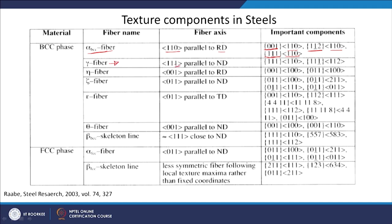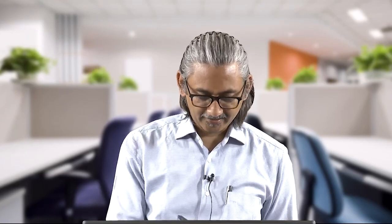For the gamma fibre, the 111 direction is parallel to ND. Again you can see the component: 111||110, another 111||112 — meaning right now we are not specifying the direction. In case of cubic material, the direction of the normal to a plane and the direction of the same index will always be parallel, so it does not matter whether we are referring in terms of plane or direction. Like that, there are other components also shown here — different fibre names, their fibre axis, and the relevant component.